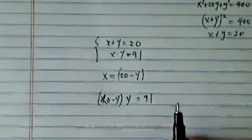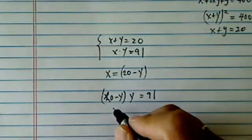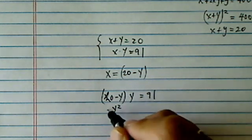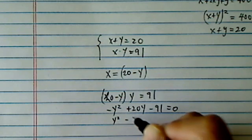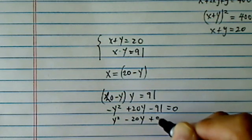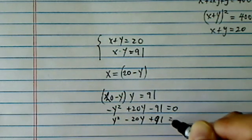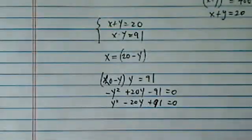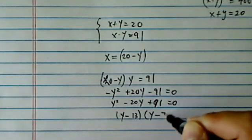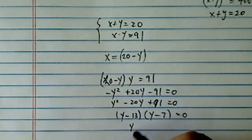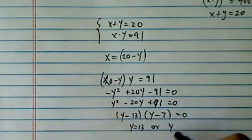And this one, it's a pretty easy quadratic equation. So minus y squared plus 20y minus 91 equal to 0, or if you prefer getting rid of the minus sign, it might be a little easier. And here we can easily factor it. Y is equal to 13 or y equal to 7.